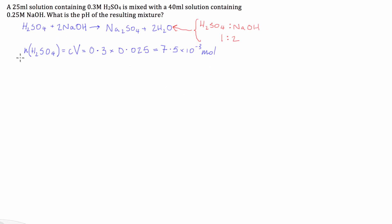And we then also do the number of moles of sodium hydroxide which is equal to concentration times volume and in this case we have a concentration of 0.25 times a volume of 40 mils or 0.04 and we're left with 1.0 times 10 to the negative 2 moles.